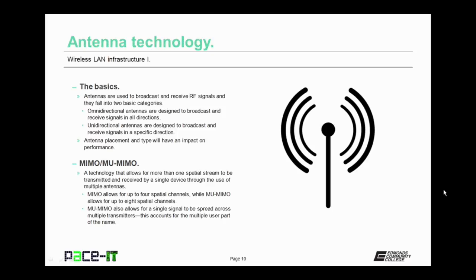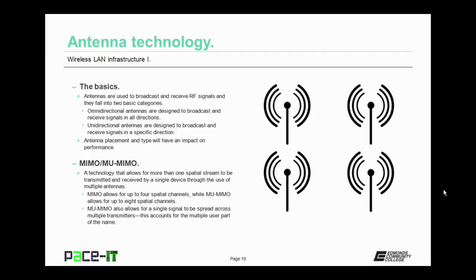Antenna placement and type of antenna will have an impact on wireless local area network performance. Both MIMO and MU-MIMO are technologies that allow for more than one spatial stream to be transmitted and received by a single device through the use of multiple antennas. MIMO allows for up to four spatial channels, while MU-MIMO allows for up to eight spatial channels. MU-MIMO also allows for a single signal to be spread across multiple transmitters.